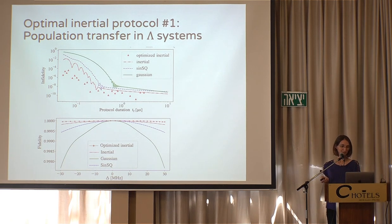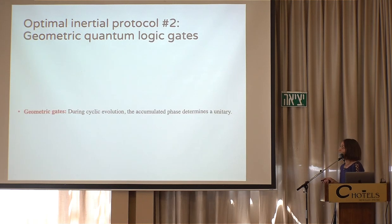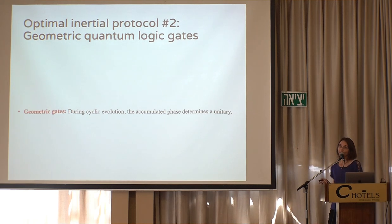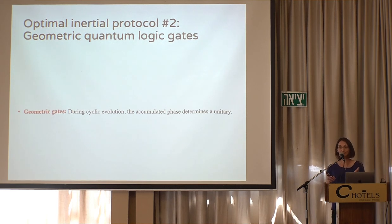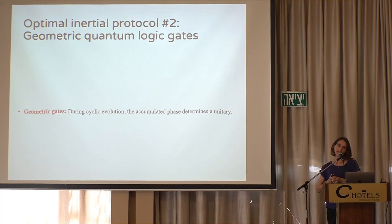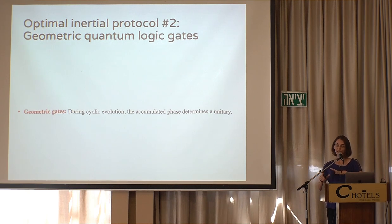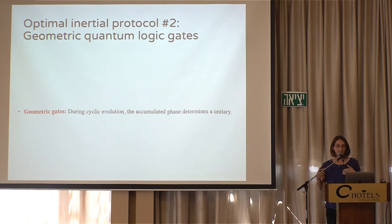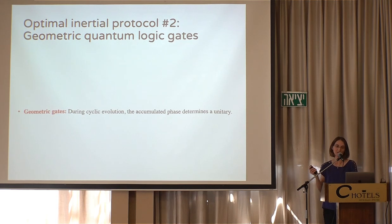The second example is using inertial STIRAP to perform fast quantum logic gates — specifically, geometric gates. In a geometric logic gate, you slowly change the Hamiltonian in a cyclic manner: start from some point in parameter space, change the parameters, and return to the same point. As long as your system is in the dark state — a zero energy state — it acquires a geometric phase. This phase implements a unitary transformation on the qubit.